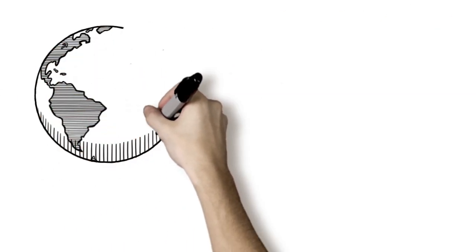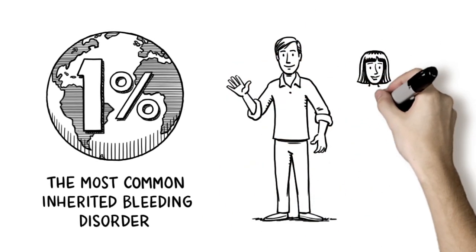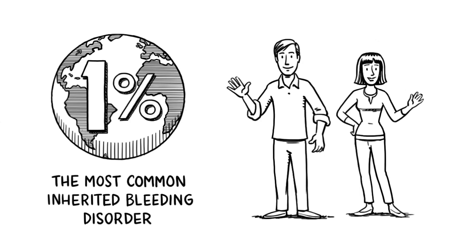VWD causes prolonged or excessive bleeding. As the most common inherited bleeding disorder, it affects approximately one percent of the population. VWD occurs equally in men and women.